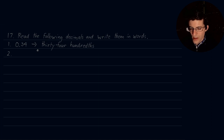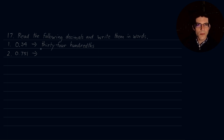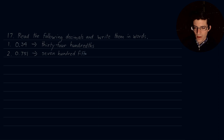Number two is 0.751. You have access to this textbook on my GitHub repository, so get on there, pull a copy for yourself, and follow along with these activities — catch me where I mess up. For 0.751: tenths, hundredths, thousandths. So this is 751 thousandths.